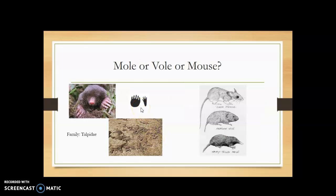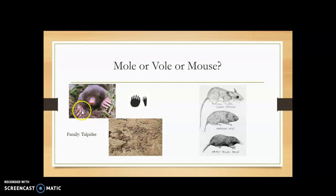What about moles versus voles? A mole has small, almost undefined ears and an extremely pointed nose. Remember, moles are not rodents — they're insectivores. They have that snout almost like it's for slurping up insects. Moles are fossorial, so they have massive paws and claws used for digging, with rudimentary or sometimes non-functional eyes. They're much more adapted to that fossorial lifestyle than voles and mice, who come above ground quite often.